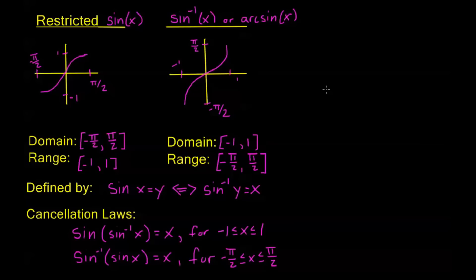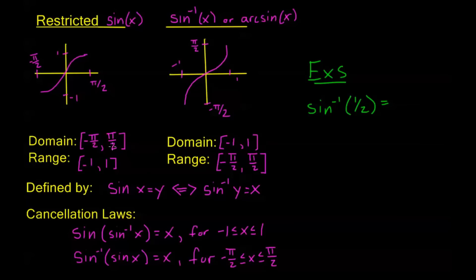I have some examples for inverse sine. Let's say I have sine inverse of 1/2. Sine inverse of 1/2 equals x where sine of x equals 1/2, and x needs to be within the restricted domain. We know sine of x equals 1/2 when x equals pi over 6. Pi over 6 is in this domain, so the answer is pi over 6. This is a unique answer because of our restricted domain — there's always one unique solution to these sine inverse problems.